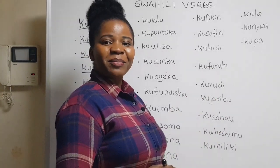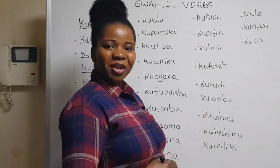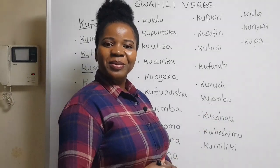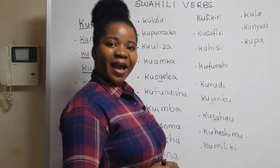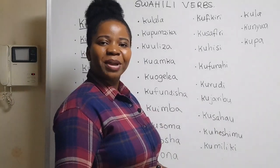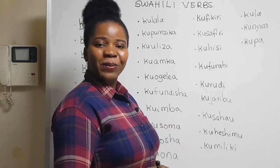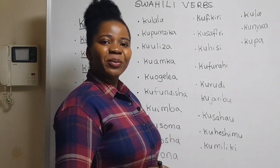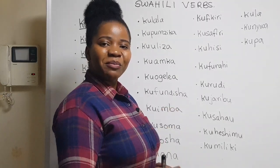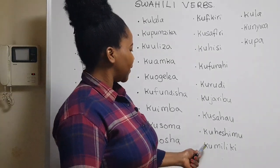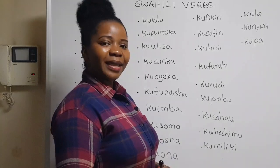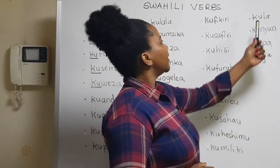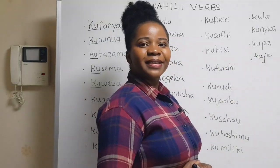'Kurudi' means 'to come back' and 'rudi' means 'come back.' 'Kujaribu' means 'to try.' 'Kusahau' means 'to forget.' 'Kuheshimu' means 'to respect' and 'heshimu' means 'respect.' 'Kumiliki' means 'to own' and 'miliki' means 'own.' 'Kula' is 'to eat.'